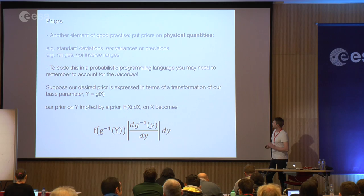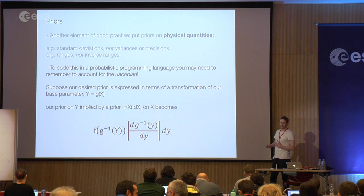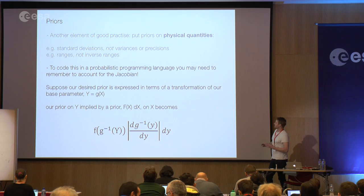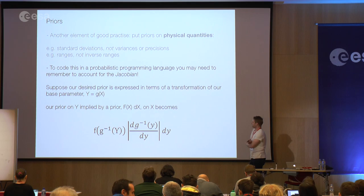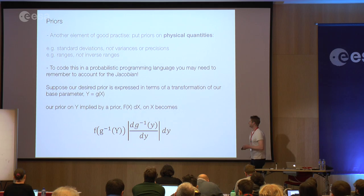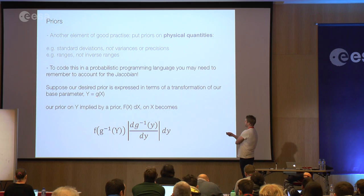You can run into problems when using a probabilistic programming language that has chosen one of these undesirable parameterizations. You may only be allowed to specify a prior on one of these nastier versions of the parameter. What you'll need to do is choose your prior on the physical quantity — on the range — and then translate that nice prior into what it implies on the transformed parameter. For most distributions, you simply need to account for the Jacobian of the inverse transformation.